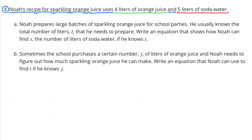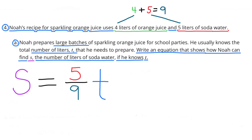Number 4: Noah's recipe for sparkling orange juice uses 4 liters of orange juice and 5 liters of soda water. Part A: Noah prepares large batches and usually knows the total number of liters T. Write an equation showing how Noah can find S, the number of liters of soda water, if he knows T. For every 4 liters of orange juice he uses 5 liters of soda water, totaling 9 liters. So the amount of soda water is always 5 out of 9 liters, giving the equation S equals 5 ninths times T.